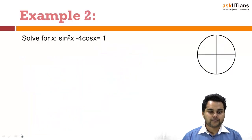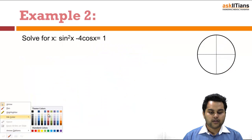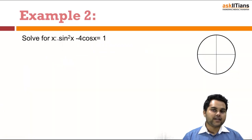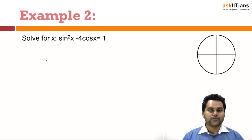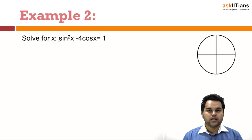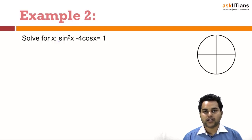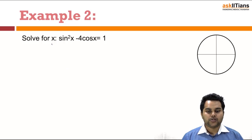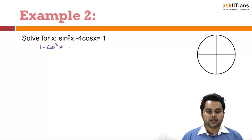Moving on to the next example. If nothing has been mentioned, you should try to solve for the general solution. The example is: sin²x - 4cos x = 1. I can split sin²x in terms of cos²x so that I get a quadratic equation in terms of cos x which can be solved. I will write sin²x as 1 - cos²x, giving 1 - cos²x - 4cos x = 1.